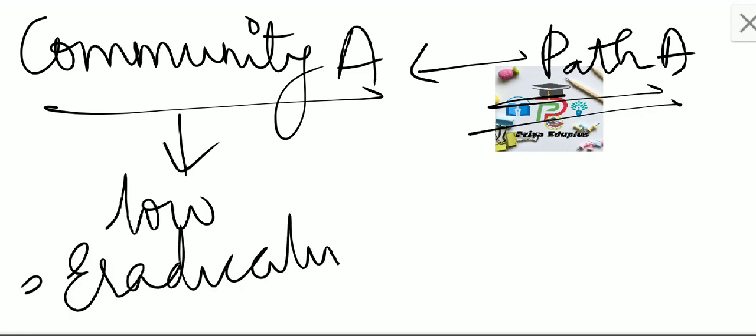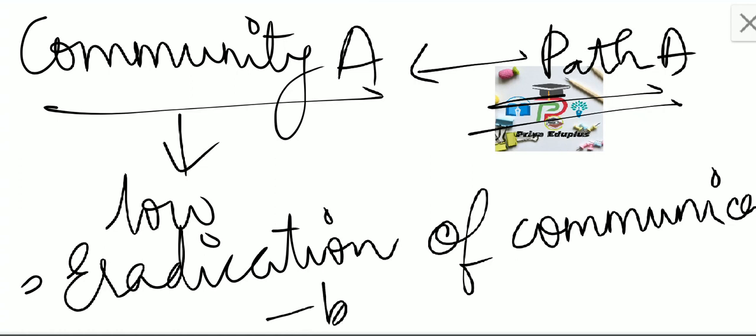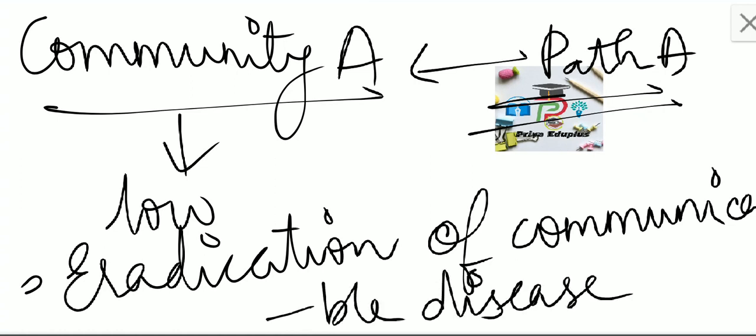Herd immunity is used in the eradication of communicable diseases. If the herd immunity is high, then the disease won't develop in the particular population.